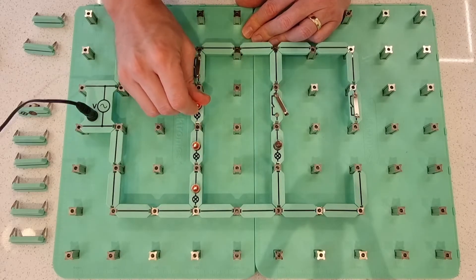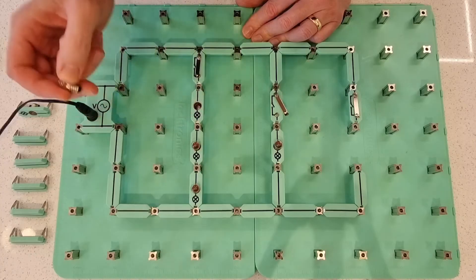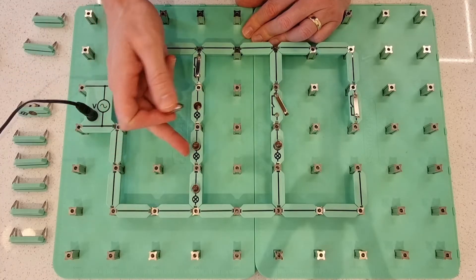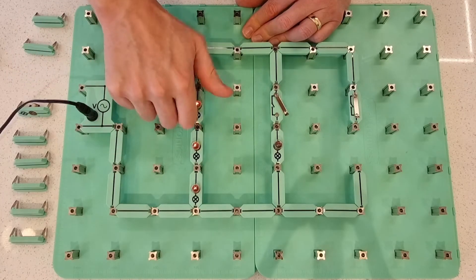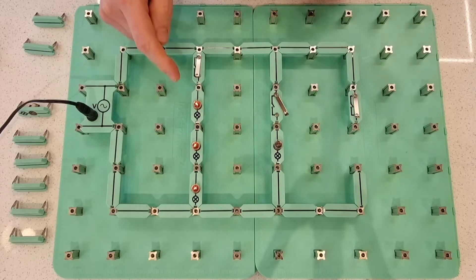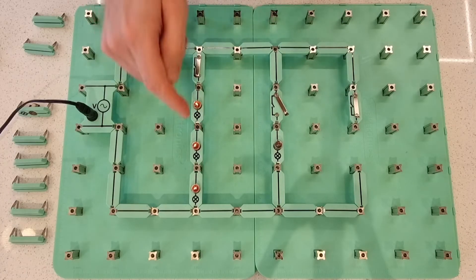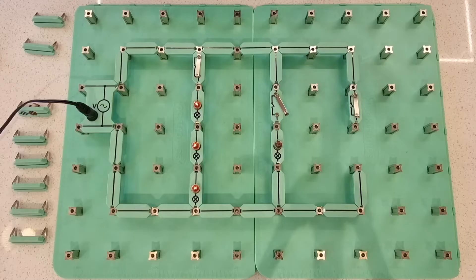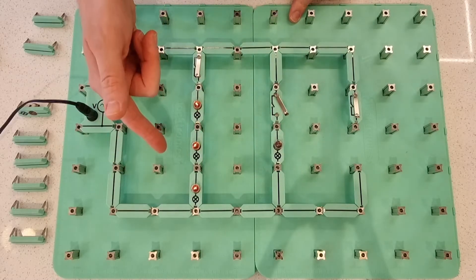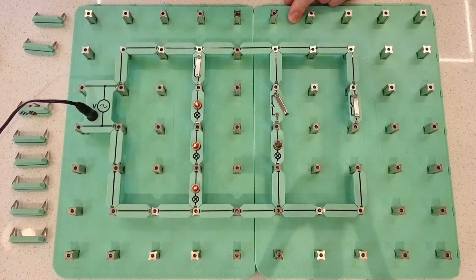And also, the other problem is if we lose one of these lamps, if one of these lamps blows, you can see that they all go out. Therefore, that is not a very clever way of controlling more than one lamp from one switch. So how can we make sure that these three lamps are controlled by one switch, but we don't get this problem with them dimming and one of the lamps taking out all of them?